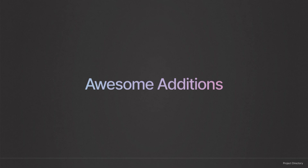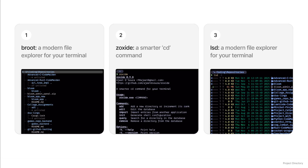Here are a few more tools that I use to round out my terminal experience — let's speedrun this section. Broot, which I talked about earlier, is a modern file explorer for the terminal. It gives you a tree view of your files and allows you to fuzzy search and navigate your file system with ease. Zoxide is a replacement for the CD command — it remembers which directories you use most frequently so you can jump to them with just a few keystrokes. LSD is a modern replacement for the LS command — it adds colors, icons, and a much more readable layout to the file listing. It's a small thing, but it makes a big difference in day-to-day usability.